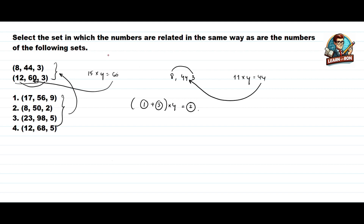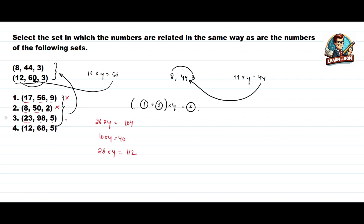So the pattern is: first number plus third number, multiplied by 4, equals the second number. Now checking the options: 17 plus 9 is 26, times 4 is 104, but they've given 56 — not our option. 8 plus 2 is 10, times 4 is 40, but they've given 50 — not our option. 23 plus 5 is 28, times 4 is 112, but they've given 98 — not our option. 12 plus 5 is 17, times 4 is 68, which is the second number. So this is our answer.